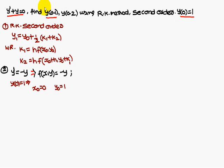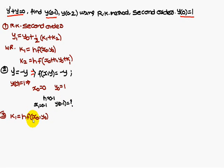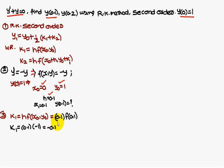We need to find y(0.1) first, so h = 0.1, giving x1 = 0.1. Now compute k1 = h · f(x0, y0) = 0.1 · f(0, 1). Since f(x, y) = -y, we substitute y = 1 to get -1, therefore k1 = 0.1 × (-1) = -0.1.